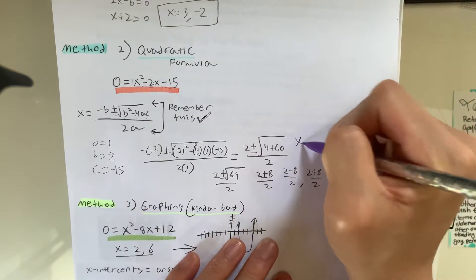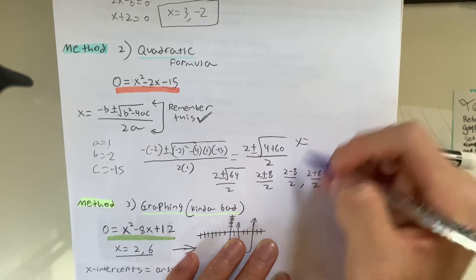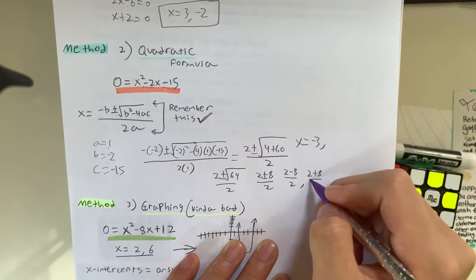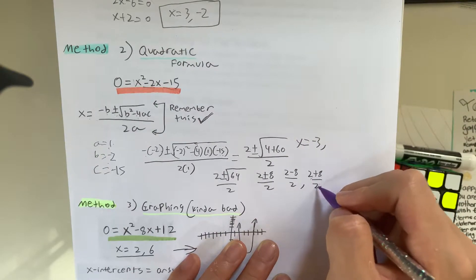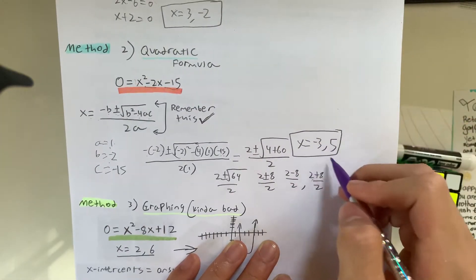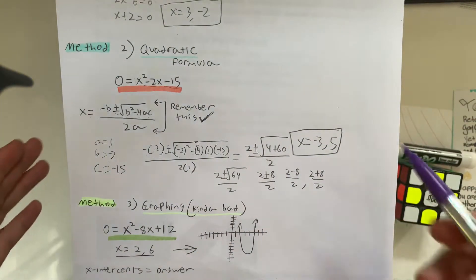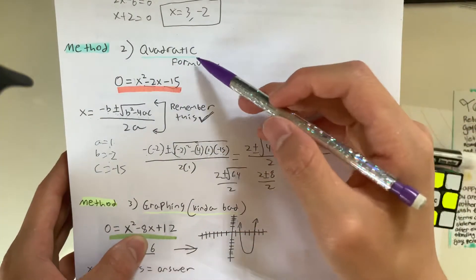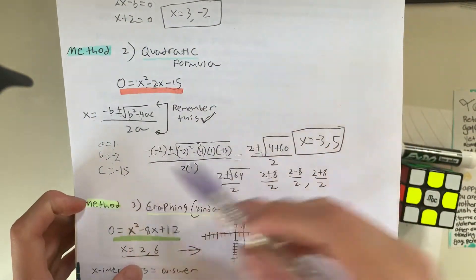Simplify these two, giving us x is equal to, that's negative 6 over 2, which is negative 3, and 2 plus 8 is 10, 10 divided by 2 is 5, meaning our answer is going to be negative 3 and 5. So, that's how you're going to use the quadratic equation, and you're just going to plug in the values of a, b, and c.